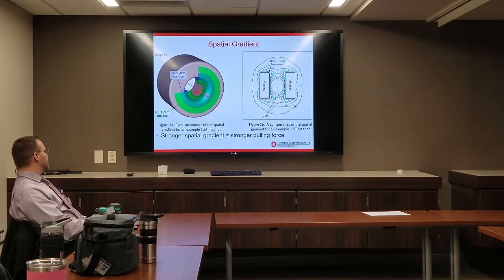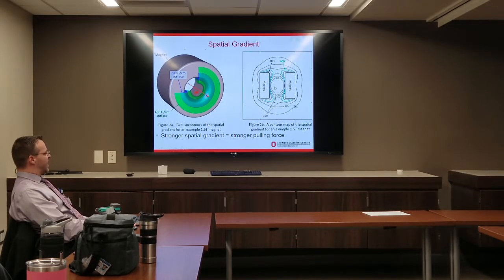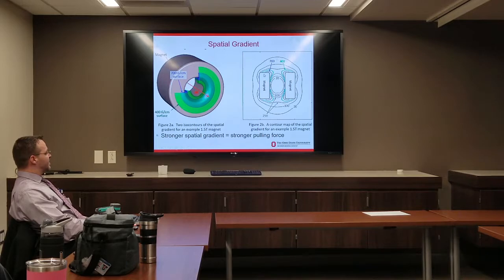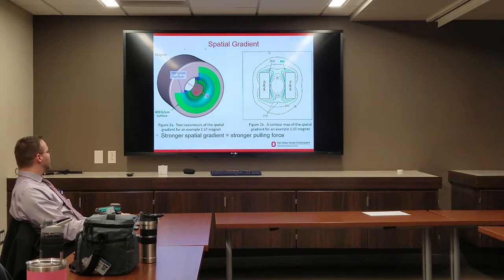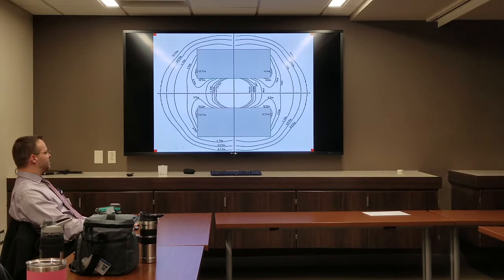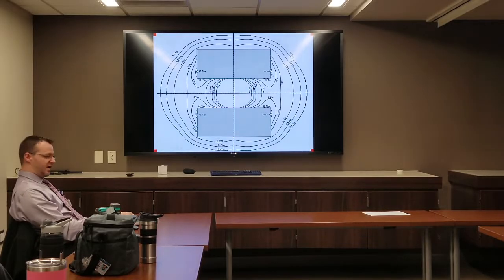Looking at a map of spatial gradients: at the center (isocenter) of the magnet, there is no spatial gradient, so there's no pulling force on an object there. Just outside the magnet, there's a strong force in that area, and the further away you get, that force gets weaker. The force is going to be strongest just outside the bore opening.